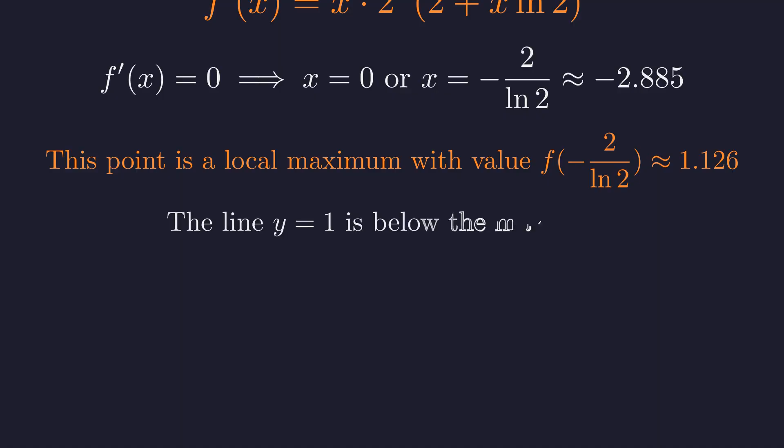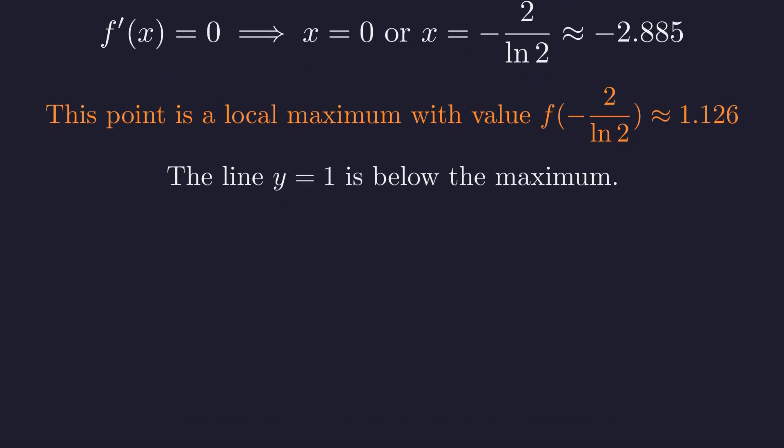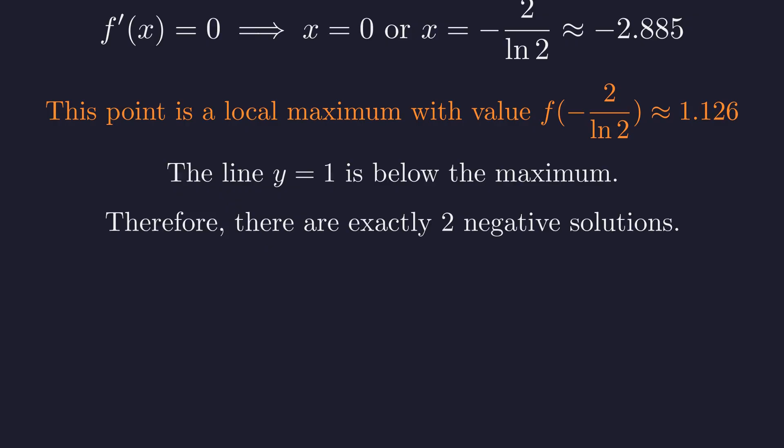Our target value is 1. Since the function rises from negative infinity to a maximum greater than 1 and then falls, the line y equals 1 must intersect the curve exactly twice. This rigorously proves that x equals negative 2 and x equals negative 4 are the only two solutions in the negative domain.